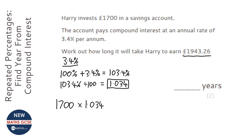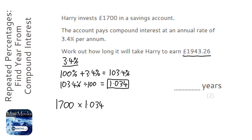What you do is get your calculator and type in 1700. Now I'm going to ask you to do something a bit weird — you're going to press the equals sign. The reason you press equals is that if you then type in times 1.034 and press equals, you'll get the answer for the first year, which is 1757.80.